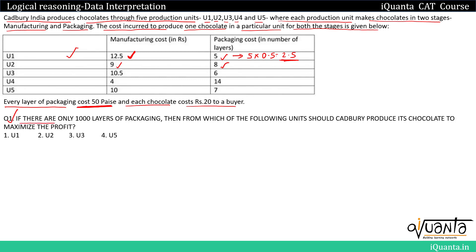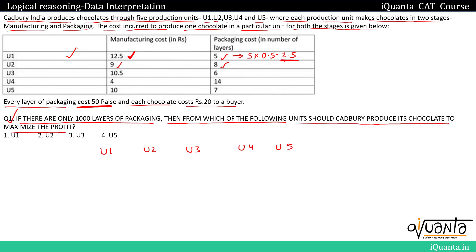Let us solve the first question. The question is: if there are only 1000 layers of packaging, then from which unit should Cadbury produce its chocolates to maximize the profit? We will check each unit — U1, U2, U3, U4 and U5.